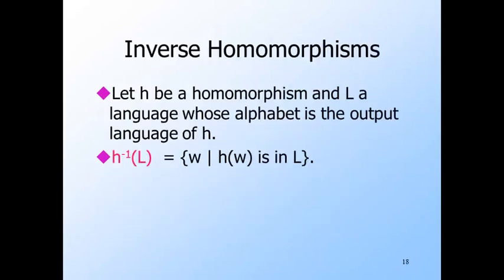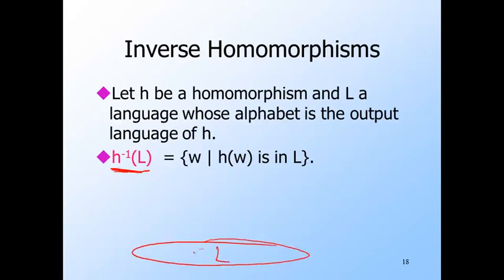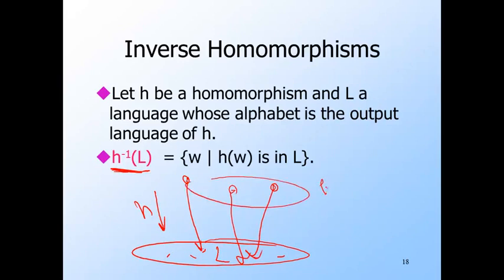We can also define the inverse homomorphism of a language or a string. We denote inverse homomorphisms by a superscript minus one. The result of applying the inverse of a homomorphism H to a language L is the set of strings W such that when you apply H in the forward direction to W, you get a string in L. Any string that maps into L when you apply H is in H inverse of L, and any string that misses L when you apply H is not in H inverse of L.